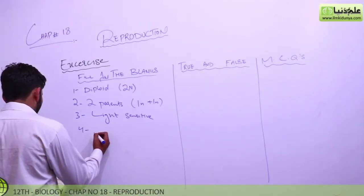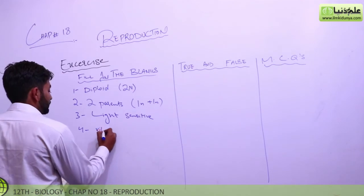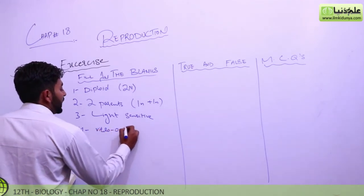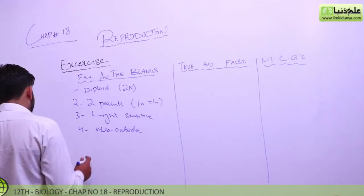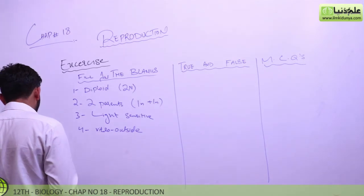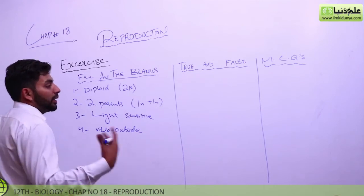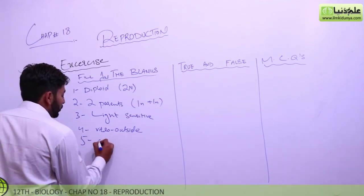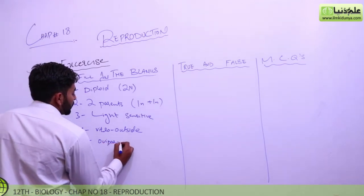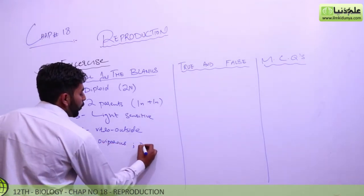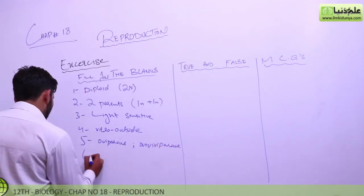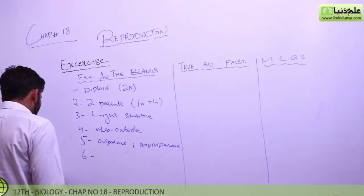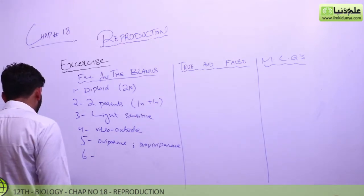External fertilization occurs. Then he asks that oviparous and ovoviviparous animals provide more protection to their young ones during development. Who has such an organism which provides more protection to our young ones? So one is oviparous and the other is ovoviviparous. This way, the fetal tissue is established between uterine and fetal tissue for the exchange of oxygen.